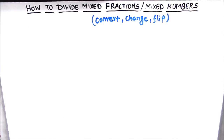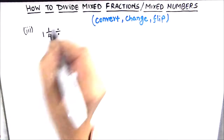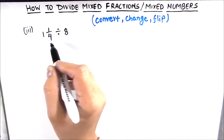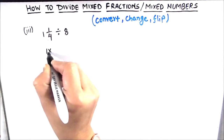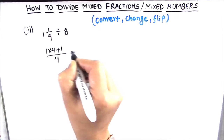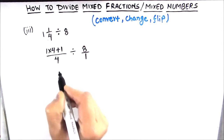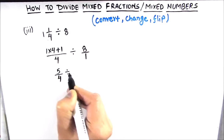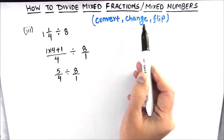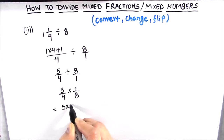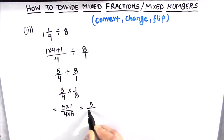Let's solve one more example where one fraction is a mixed fraction and the other is a whole number: 1 and 1 fourth divided by 8. Here we have a mixed fraction and a single number, which can be written as 8 over 1. We convert: 1 times 4 plus 1 divided by 4 gives us 5 over 4. Then we change and flip: 5 over 4 times 1 over 8. We get 5 times 1 in the numerator and 4 times 8 in the denominator, which is 5 over 32. That is our final answer.